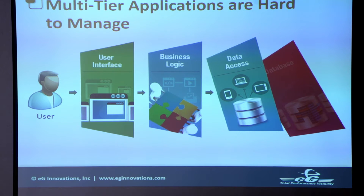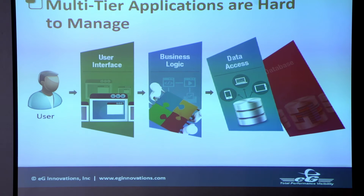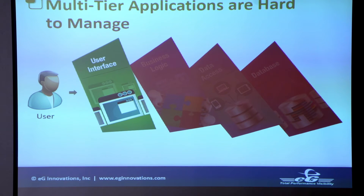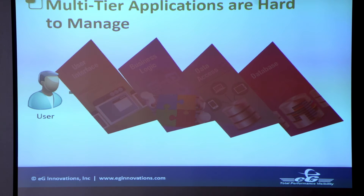With all of these solutions, when everything works fine, delivery is very good and users get a great rich experience. But what happens if something goes wrong? Let's say something happens on the database side — it puts pressure on the stack. The database can't access Citrix or VMware, and now the problem is toppling down through the middleware side all the way to the end user.